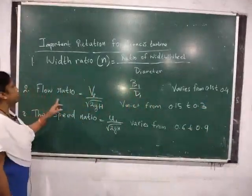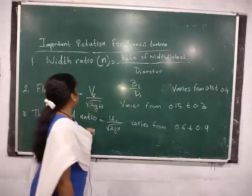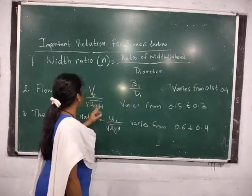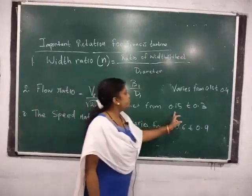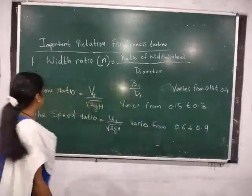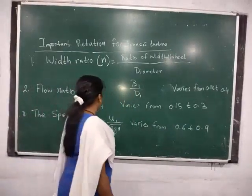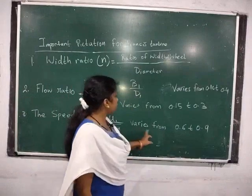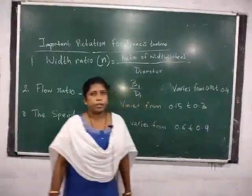Next is the flow ratio, which is V_F (velocity of flow) divided by root over of 2gH. This value varies from 0.15 to 0.3. Next is the speed ratio, which is U1 by root over of 2gH. This varies from 0.6 to 0.9.